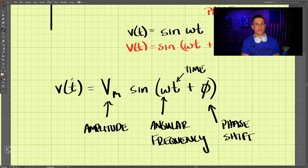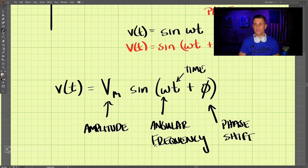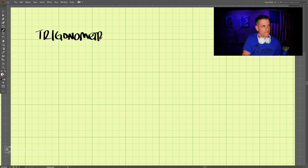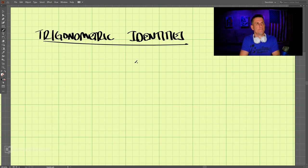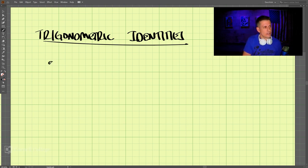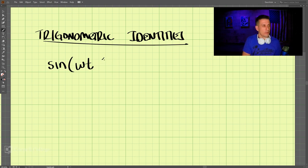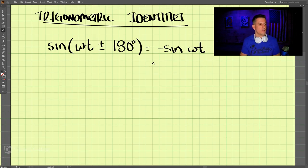Now let's look at trigonometric identities — trigonometric meaning sine and cosine, and identities meaning equalities. One identity is: sin(ωt ± 180°) = −sin(ωt). For example, at 90 degrees on a sine curve the value is 1; shifting by 180 degrees to 270 degrees gives negative 1 — the negative of the original value.